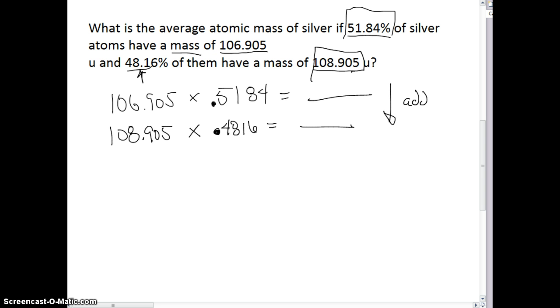So I've got 106.905 multiplied by 0.5184, and I'm getting an answer there of 55. I'm going to round it off, call it 55.4, and then I'm going to do the next one, 108.905 multiplied by 0.4816, and I'm getting an answer there of 52.4, and then I'm going to add those two together. So I'm going to get 55.4 plus 52.4, and I get an answer of 107.8 AMUs, or we could write grams per mole. Either one works.